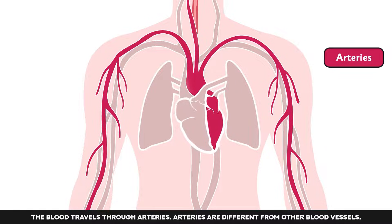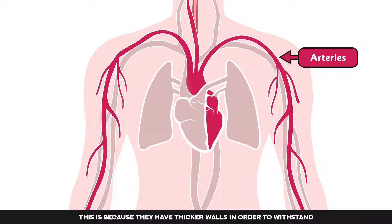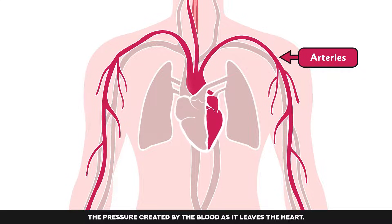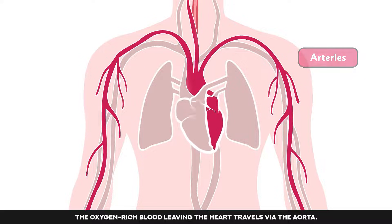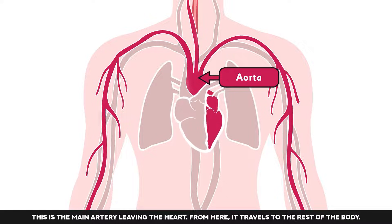The blood travels through arteries. Arteries are different from other blood vessels because they have thicker walls in order to withstand the pressure created by the blood as it leaves the heart. The oxygen-rich blood leaving the heart travels via the aorta. This is the main artery leaving the heart. From here, it travels to the rest of the body.